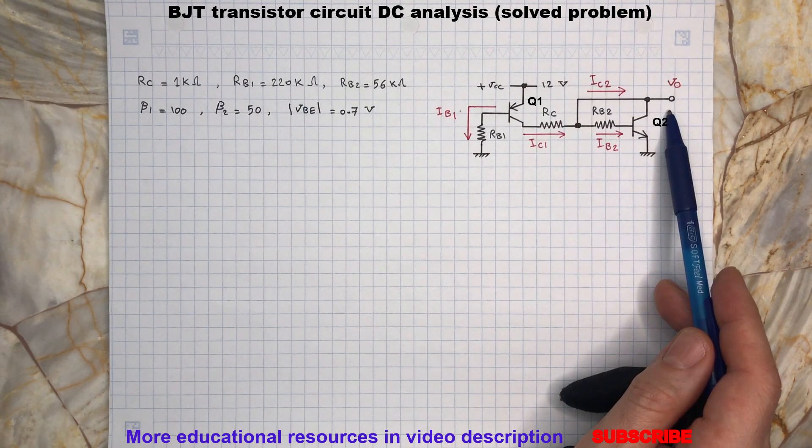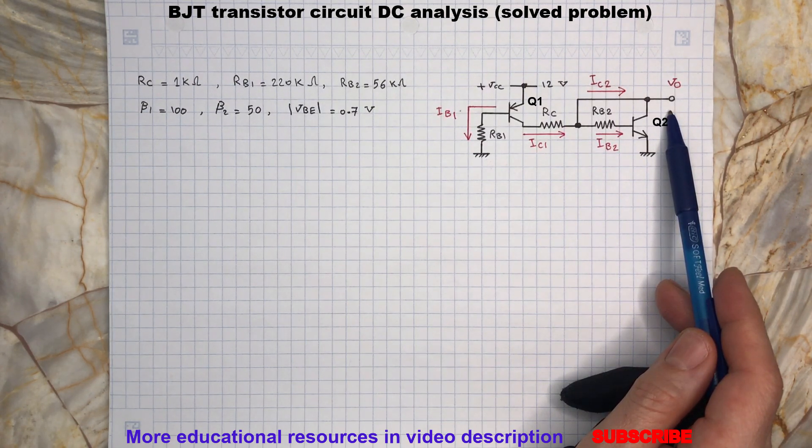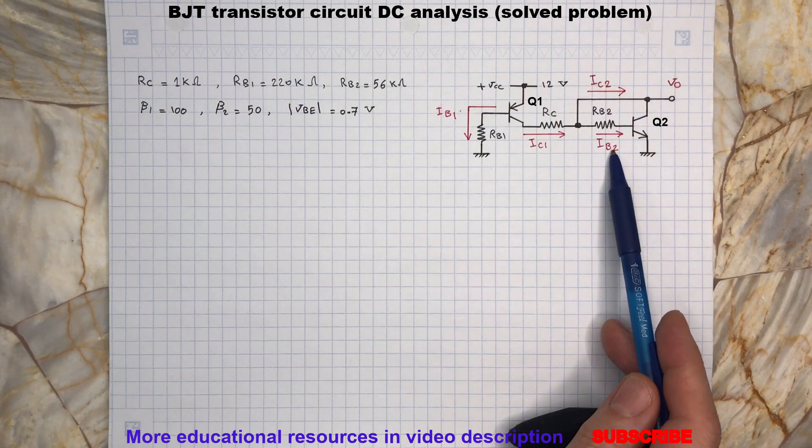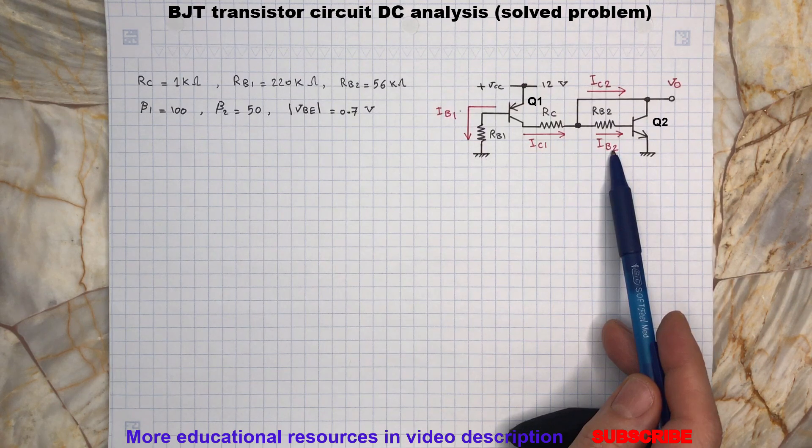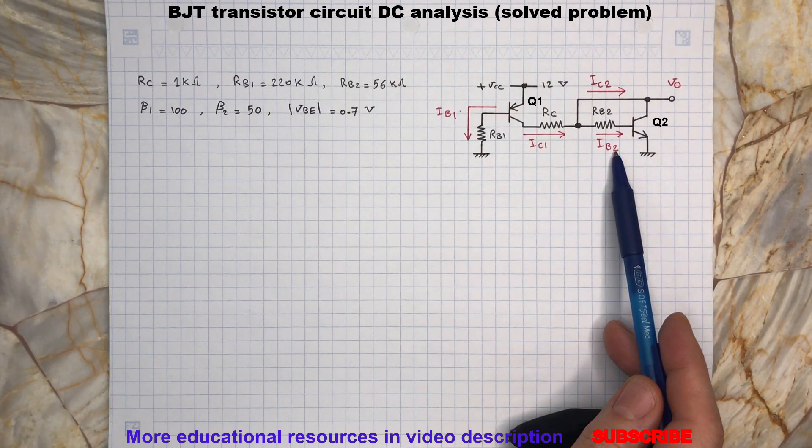To find the voltage at the VO terminal, all we need to do is calculate the current flowing through the base of Q2, multiply it by the value of resistor RB2, and then sum it with 0.7 volt which is the voltage at the base of Q2.